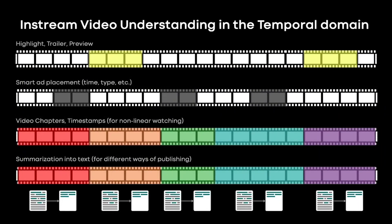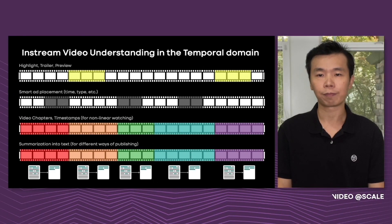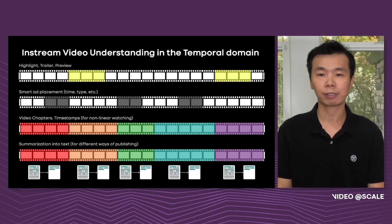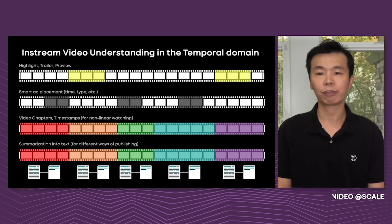In the temporal domain, there are several use cases of in-stream video understanding. In the first one, the system identifies the highlight score of each frame, which can be used to identify highlight moments inside a video and create a video trailer or preview. Such a signal could also be used for inserting advertisements at the right moment. In-stream video understanding can also identify timestamps for breaking a longer video into shorter chapters, useful for non-linear watching, and can help summarize video transcripts into different forms of text, enabling different ways of publishing.